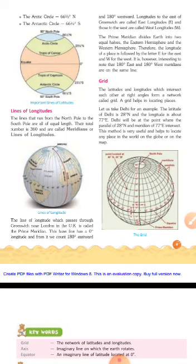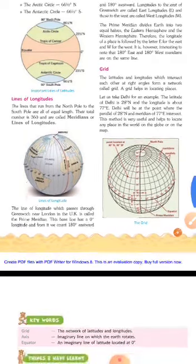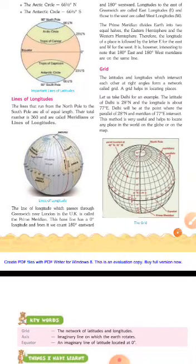The next topic is Grid. The latitudes and longitudes intersect each other at right angles, forming a network called a grid. A grid helps in locating places. Let us take Delhi as an example.